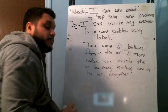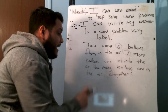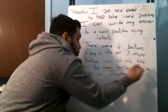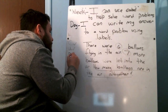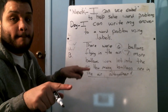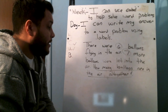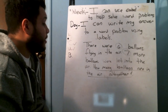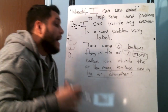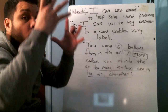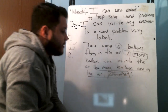U stands for — underline the question. I see my question mark. I see a question word: 'How many balloons are in the air altogether?' B stands for boxing the math words. 'There were six balloons flying in the air' — no math words there. 'Seven more balloons were let into the air' — yes, the word 'more.' 'How many balloons are in the air altogether?' — 'altogether' is another math word. Perfect.